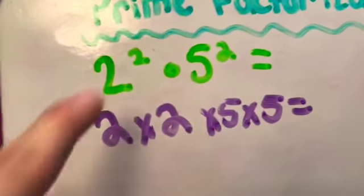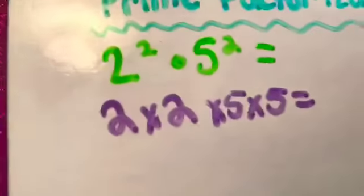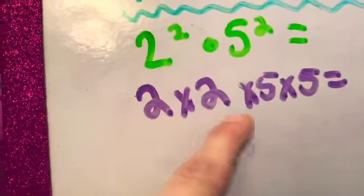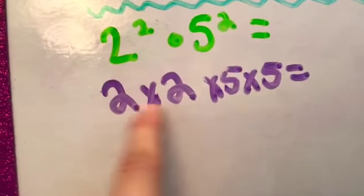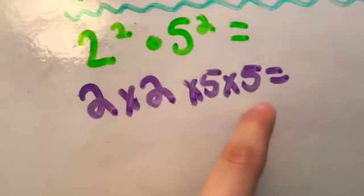We have 2 to the second power times 5 to the second power. Like I said, 2 to the second power is 2 two times. So, 2 times 2, and then the same thing for 5. So, 5 times 5. So, 2 times 2 times 5 times 5.